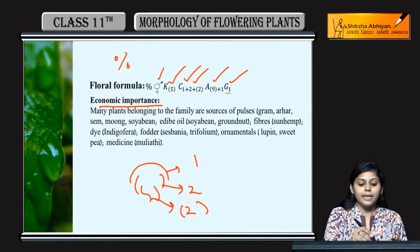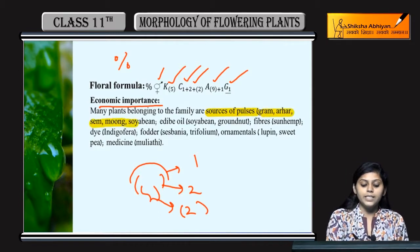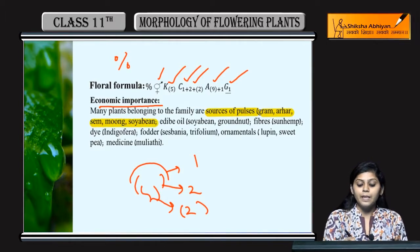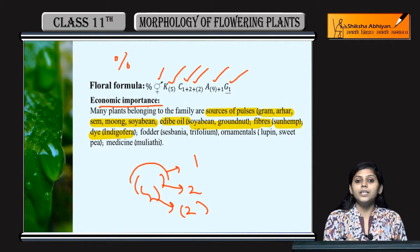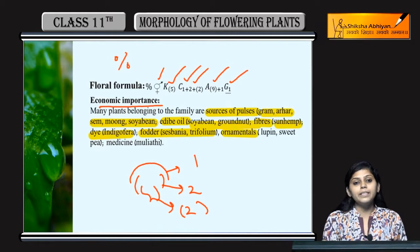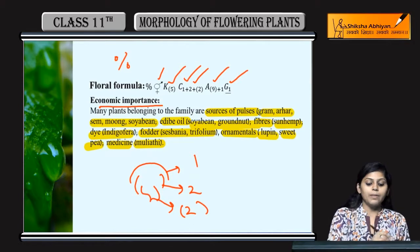Economic importance kya hai iska? Kahan kahan use hota hai? Use as a source of pulses - gram, arhar, sem, moong, soya bean iske examples hain. Used as edible oil - soya bean aur groundnut iske examples hain. Fibers ki tarah use hote hain - sun hemp. Dye ke liye indigofera use hota hai. Fodder ke liye sesbania aur trifolium. Ornamentals ki tarah bhi use hota hai - lupin, sweet pea. Medicinal importance bhi hai.